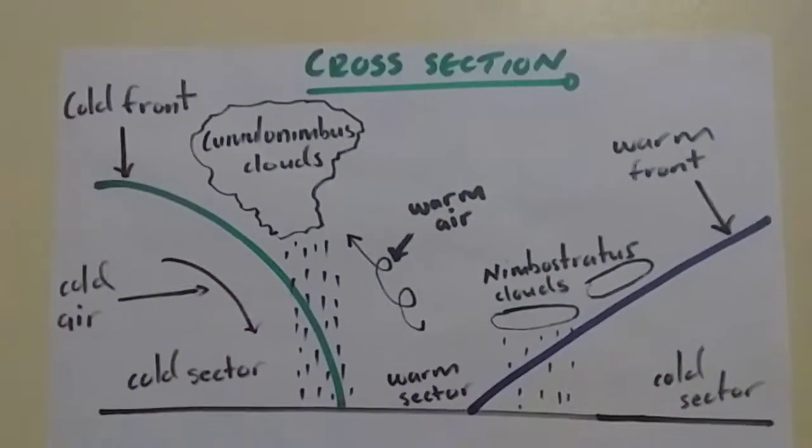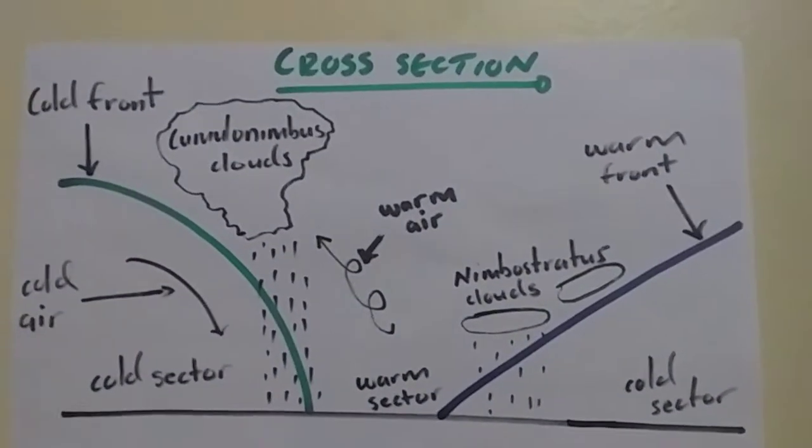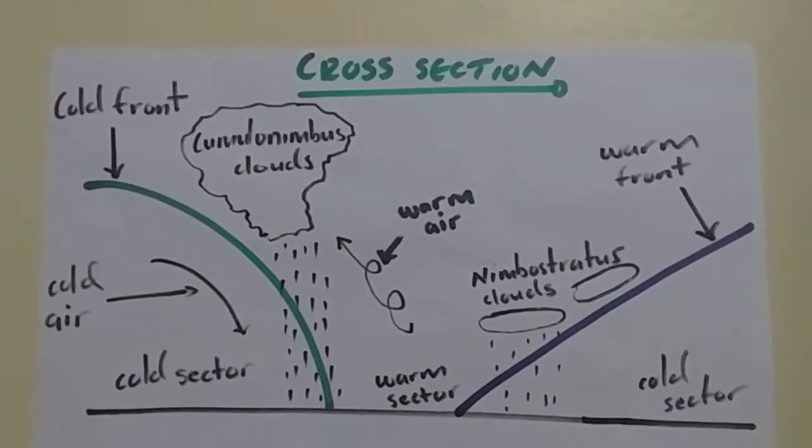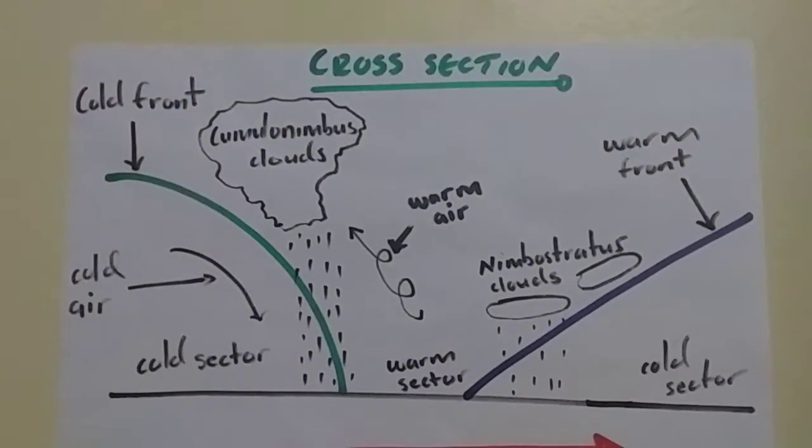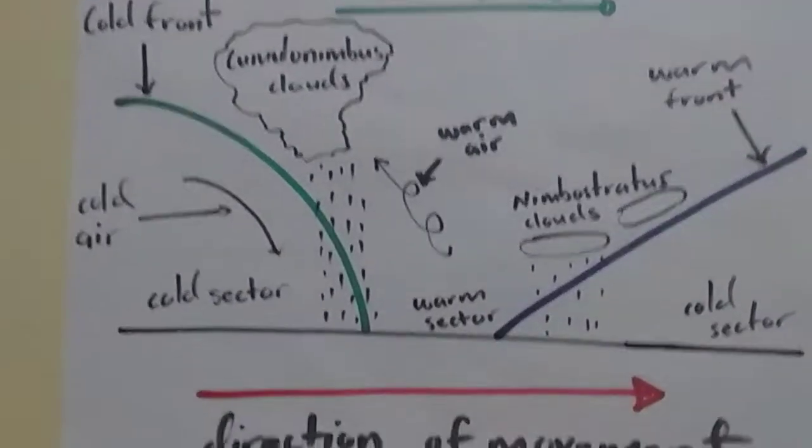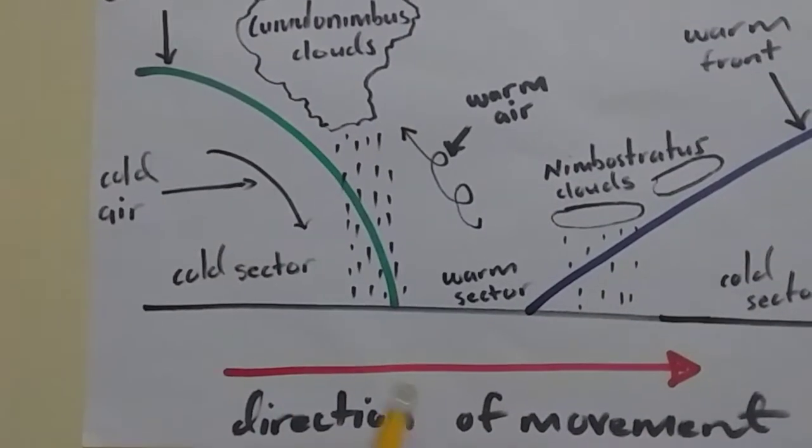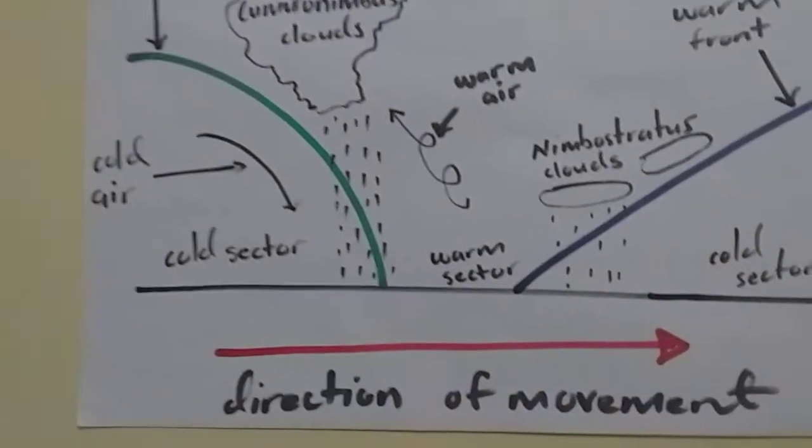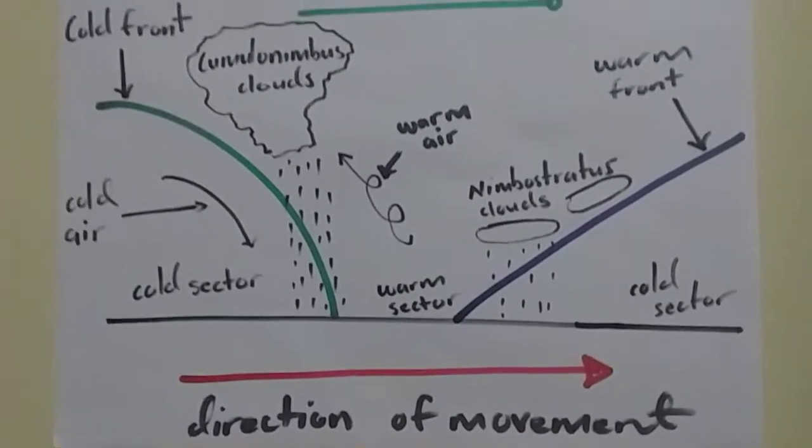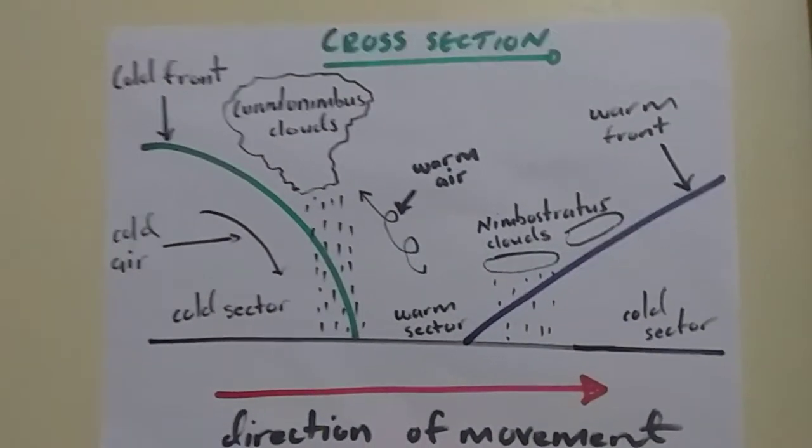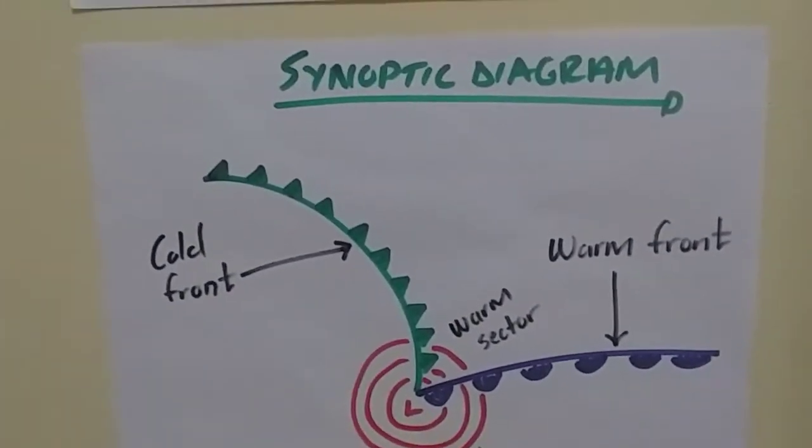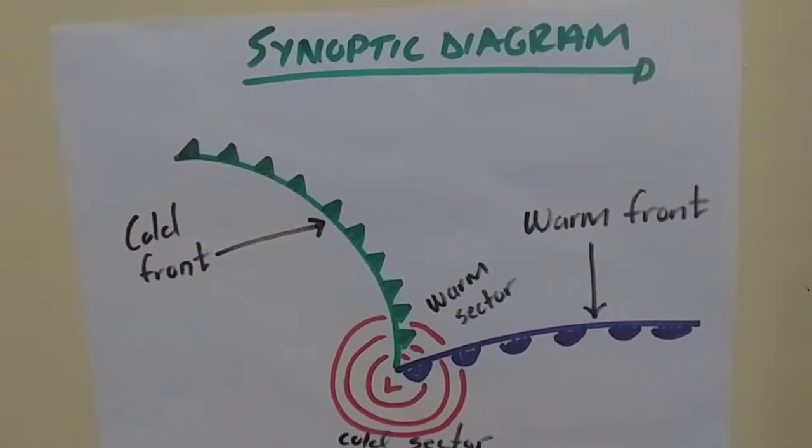And then, the cold sector. That is how you are supposed to draw the cross section every time you are asked for this to get your full marks. And then, down here, we have the direction of movement of the mid-latitude cyclone from west to east, which is eastward. So, to get full marks, this is what you are expected to draw. And if it's a synoptic, this is what you draw. And so, I have answered most of the questions. If anybody still has a problem with that, on the next video...